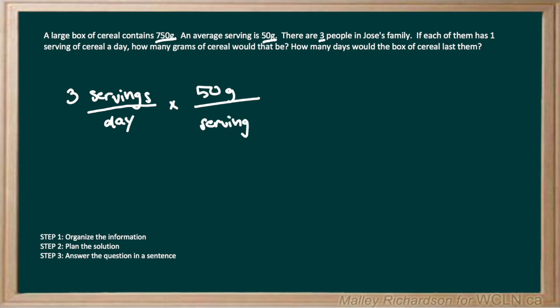Now by setting it up this way, we can see that our units of servings cancel out. And we're left with our units of grams per day. So three times 50 gives us 150. And our units are grams per day. So the family consumes 150 grams of cereal per day.